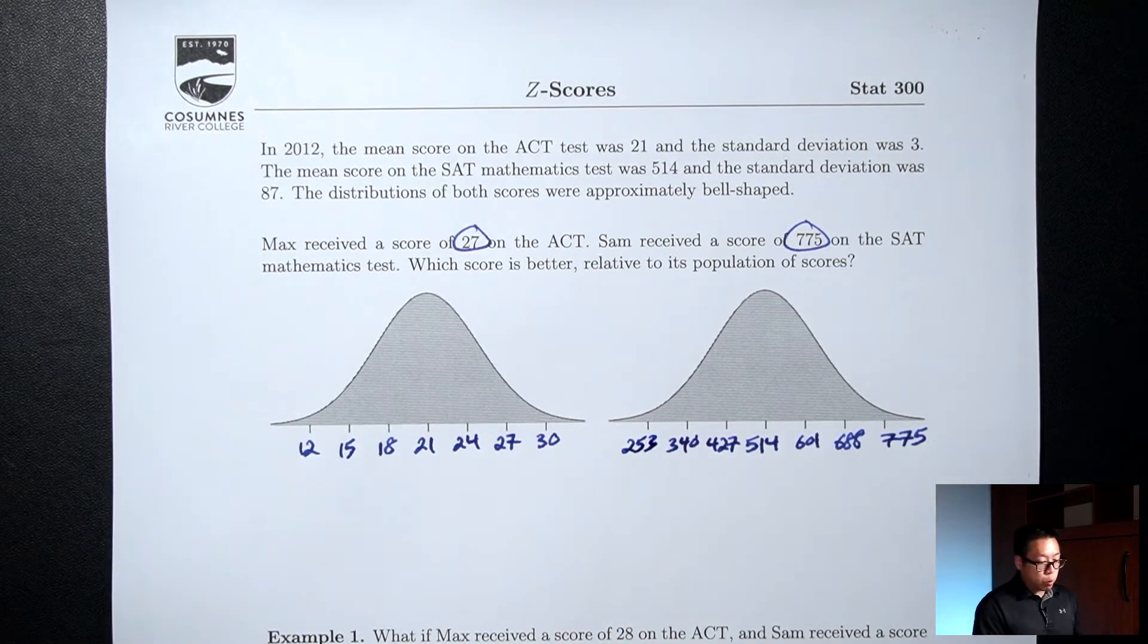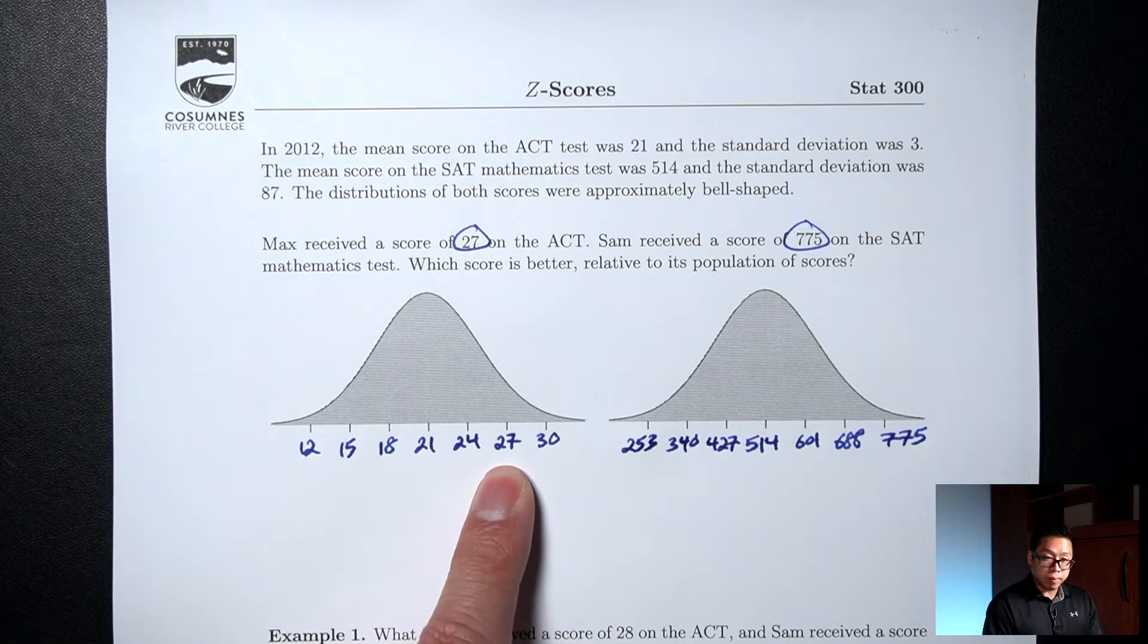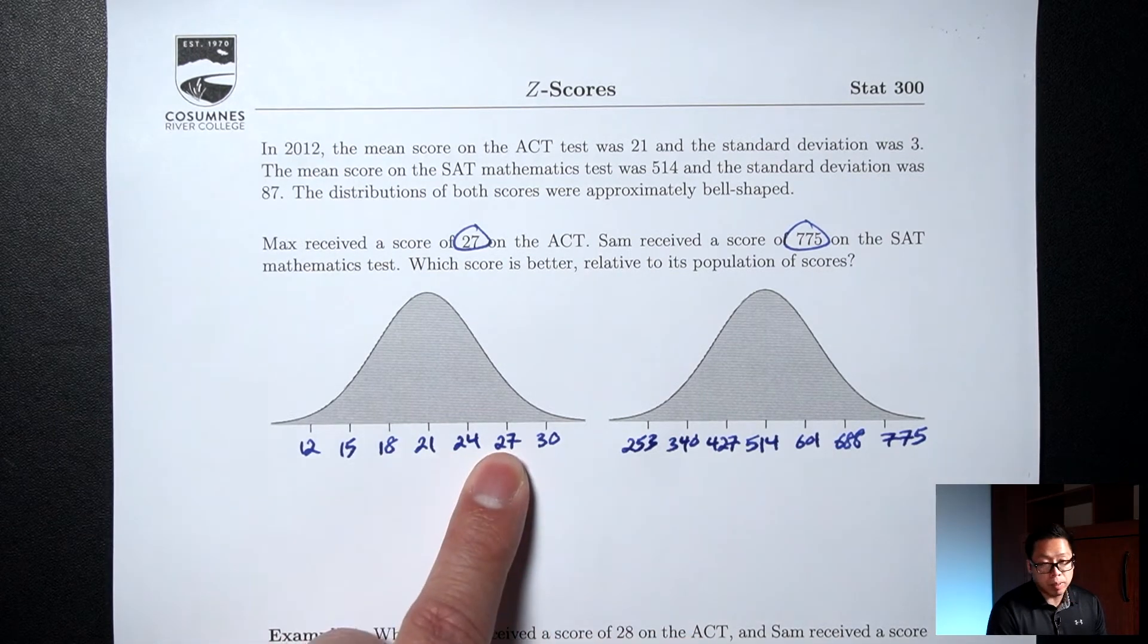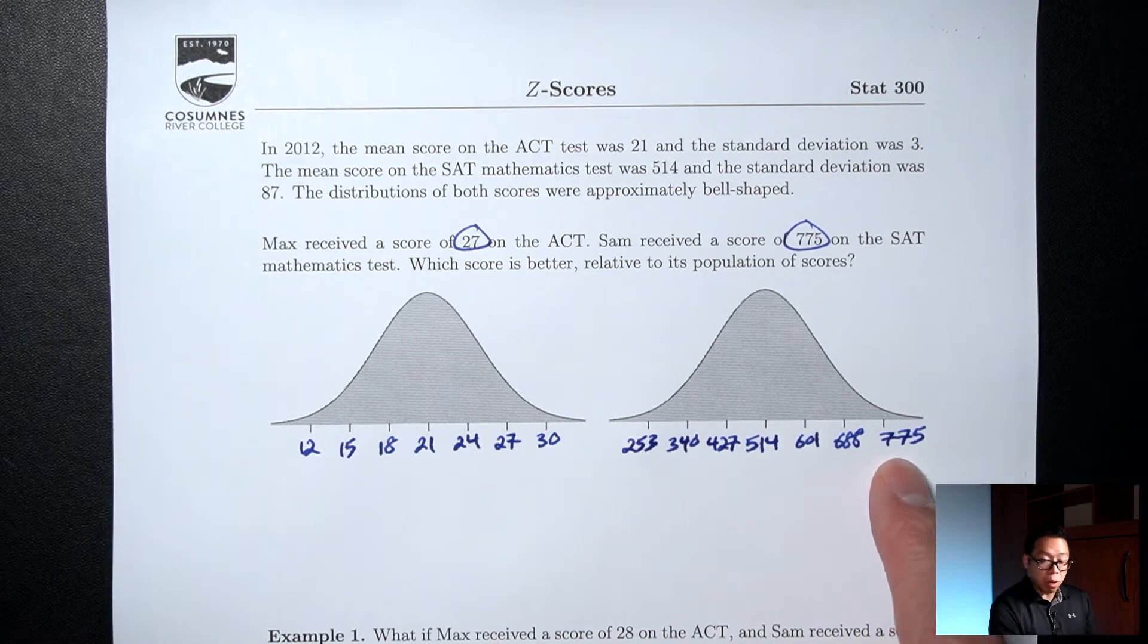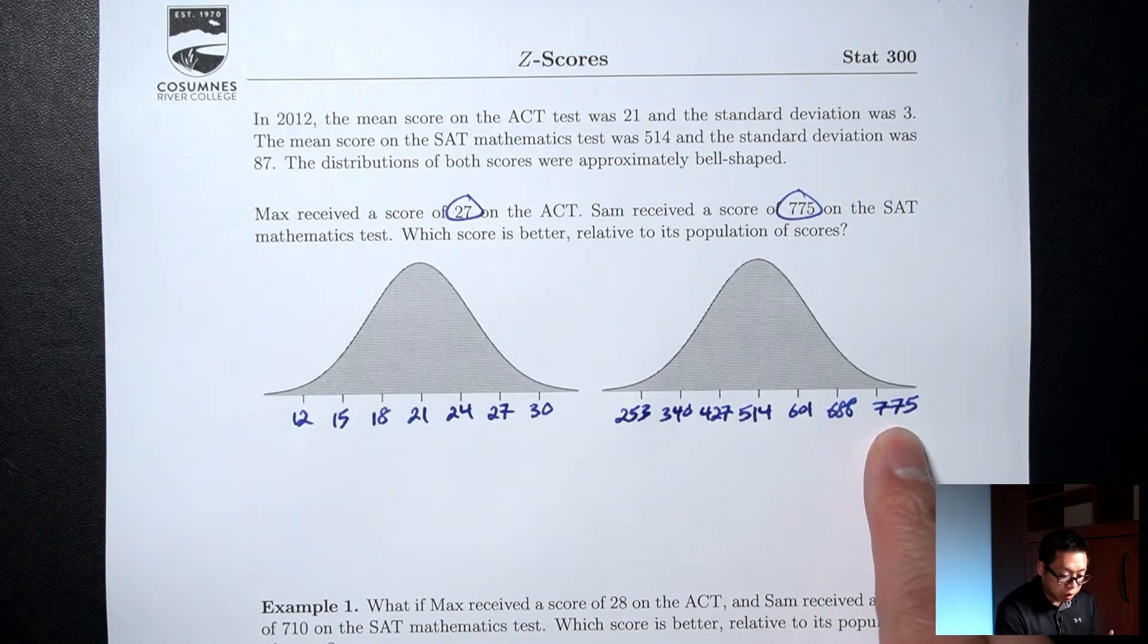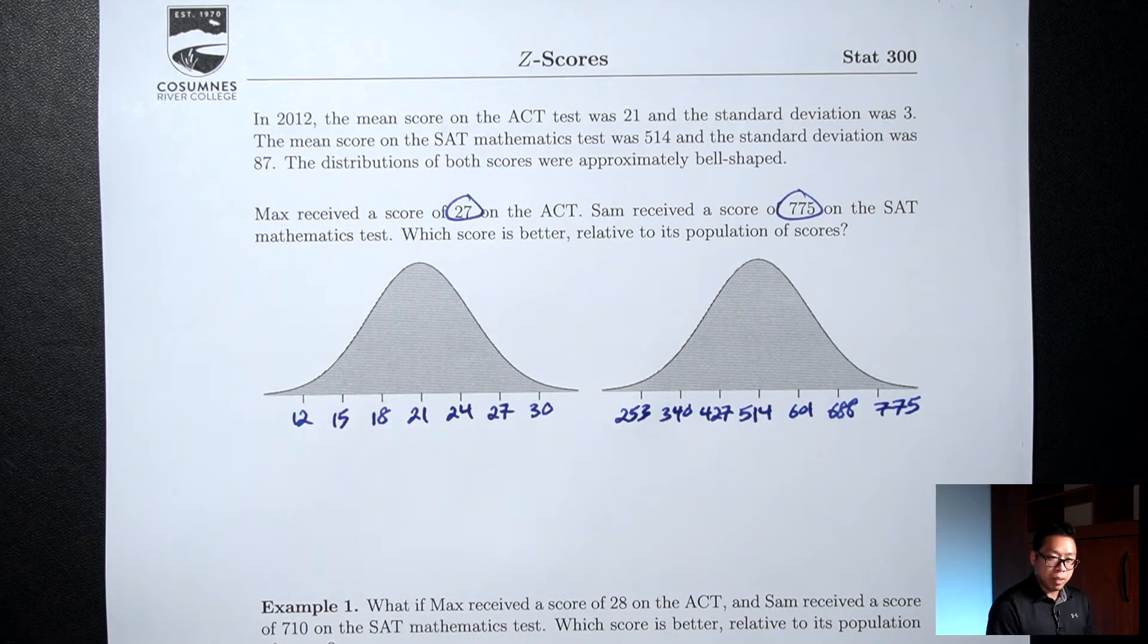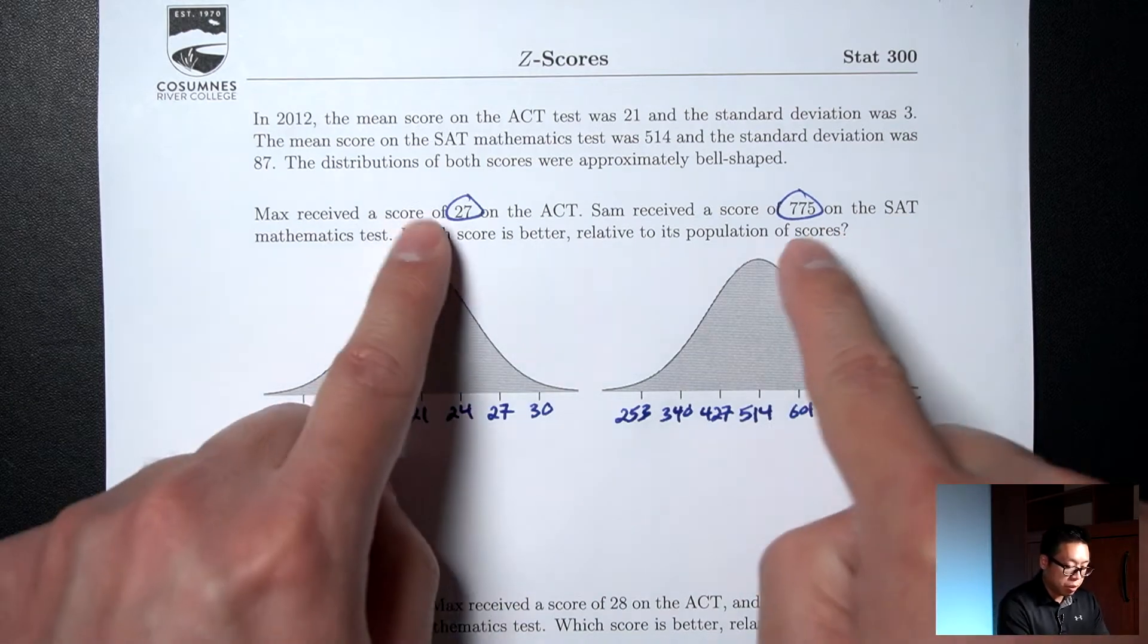Now, notice where is the 27 and where is the 775? Here's the 27. Here's the 775. Notice the 27 is one step, two steps, two steps above the middle. The 775 is one, two, three steps above. So can we say that the 775 is better because it's three steps above versus the 27 which is only two steps above? Is that a valid way to compare? Turns out that yes, that is a valid way to compare, to compare how many steps above each score is.